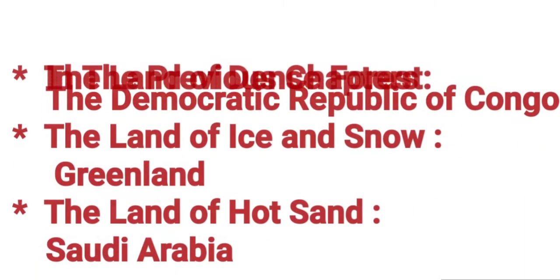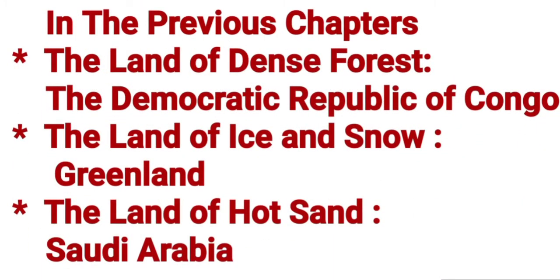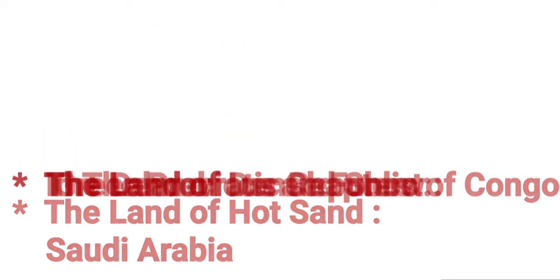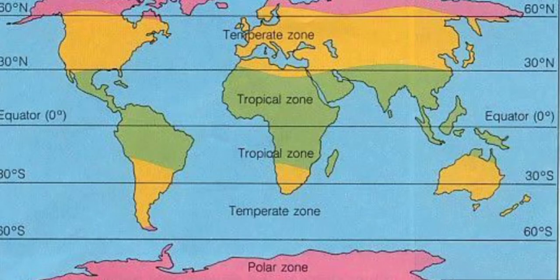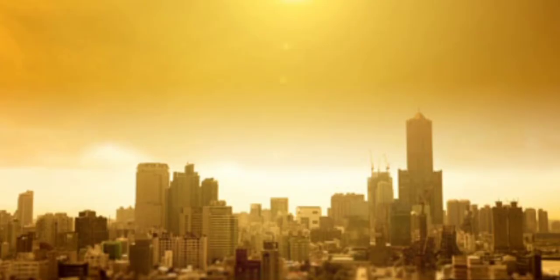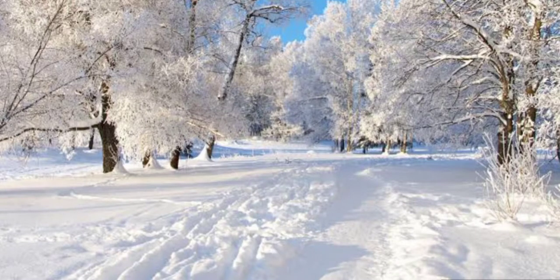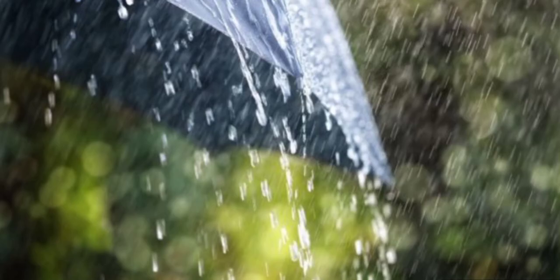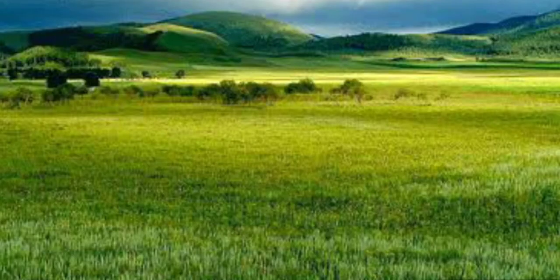In the previous chapters, you have already read about the different climatic conditions prevailing in different parts of the world. Some parts of the world have extreme climate in which summers are too hot and winters are too cold. These parts also receive low rainfall. In these regions, only grasses grow. Most of the grasslands of the world are found in the temperate zone.